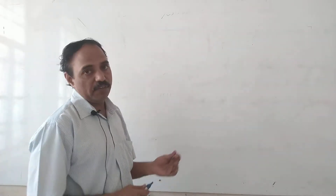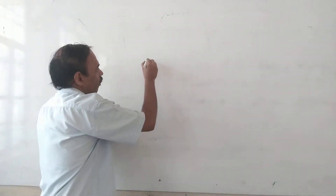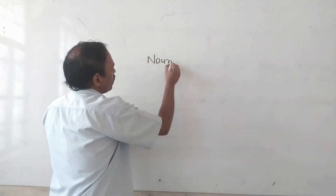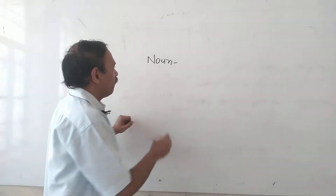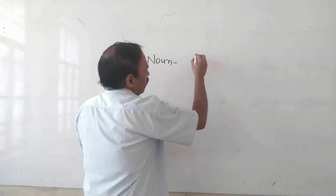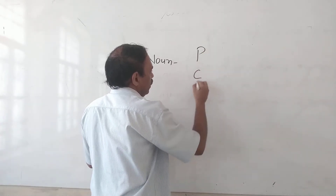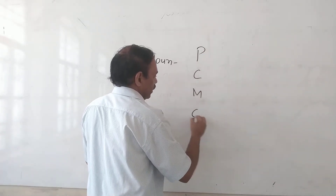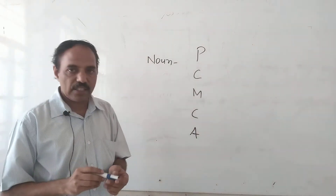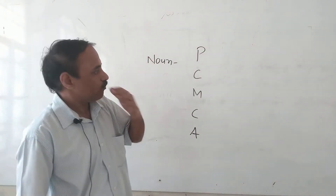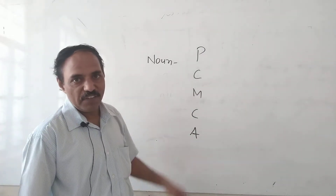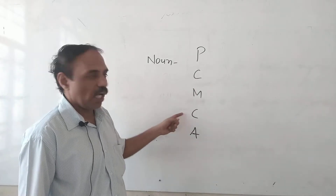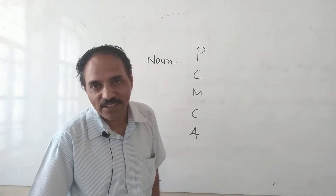Yesterday, we read about the noun. Noun is the name of a person or thing. We called the types of noun: P, C, M, C, A. I asked this question - it is very simple: P, C, M, C, A - like Physics, Chemistry, Mathematics, Chartered Accountant.